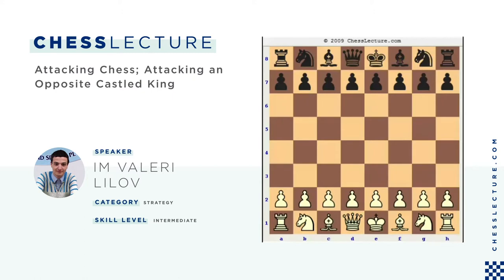Hello chess friends. This is Video Master Valerio Livov for chesslecture.com. In our lecture today I'm going to continue the discussion of some of the most typical and interesting attacks in chess. Right now I want to explain how to attack against an opposite castled king — for example one side castled on the queen side and the opponent on the king side, or exactly the opposite. I want to start with the game played between Spassky and Petrosian in their 1969 match in Moscow, USSR.